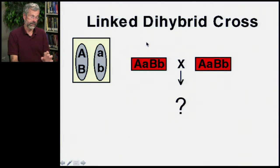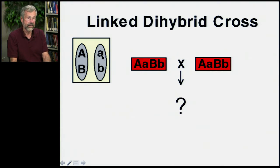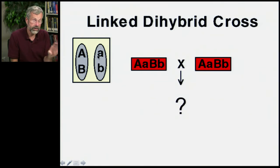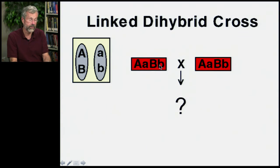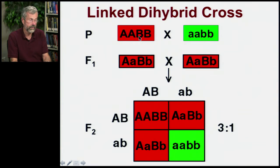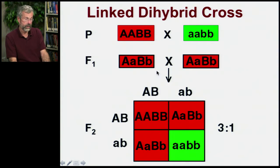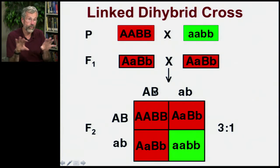So if we were to do a linked dihybrid cross, we have capital A with capital B on the same physical structure of one chromosome, and little a and little b on the same physical structure of the other chromosome. They are, in our Mendelian reckoning, double heterozygotes — they've got one capital A, one little a, one capital B, one little b, but these are on different chromosomes. Capital A and capital B are passed on in tandem, and little a and little b are passed on in tandem. This double heterozygote can only produce capital A and capital B gametes, or little a and little b gametes — not all four combinations we saw earlier.